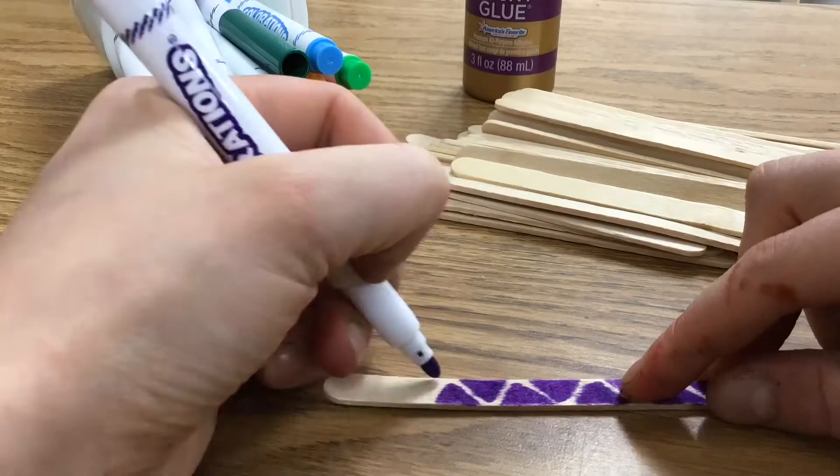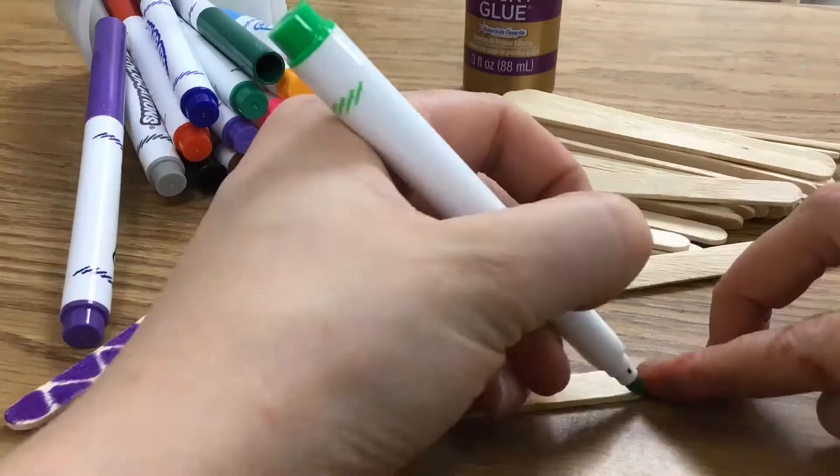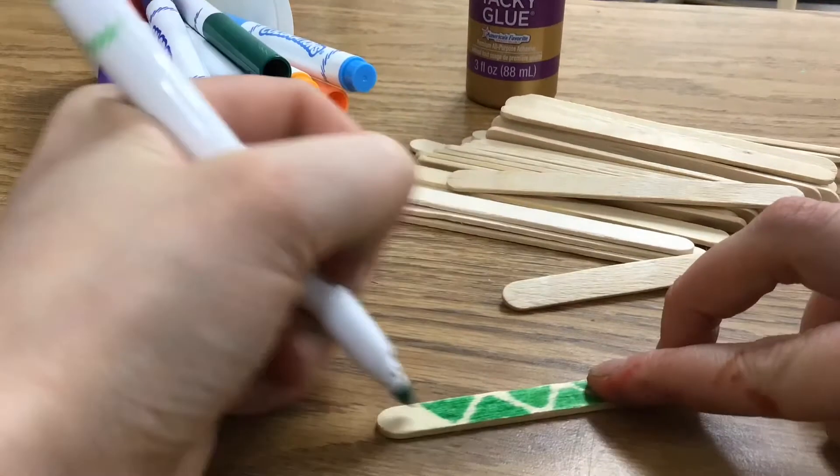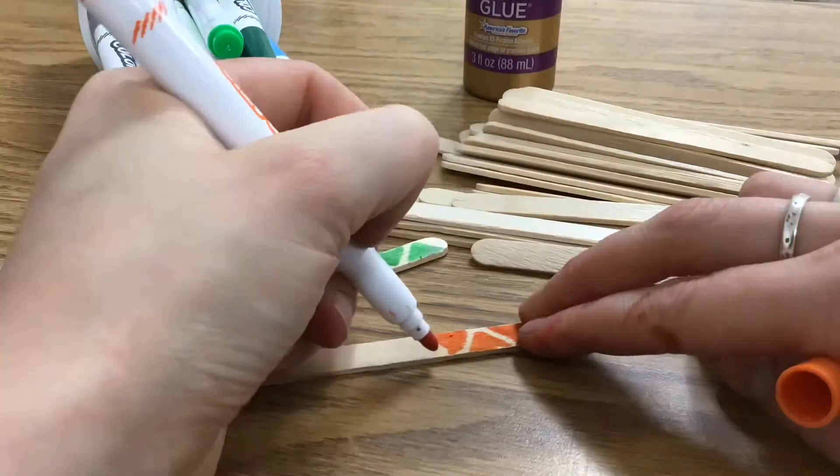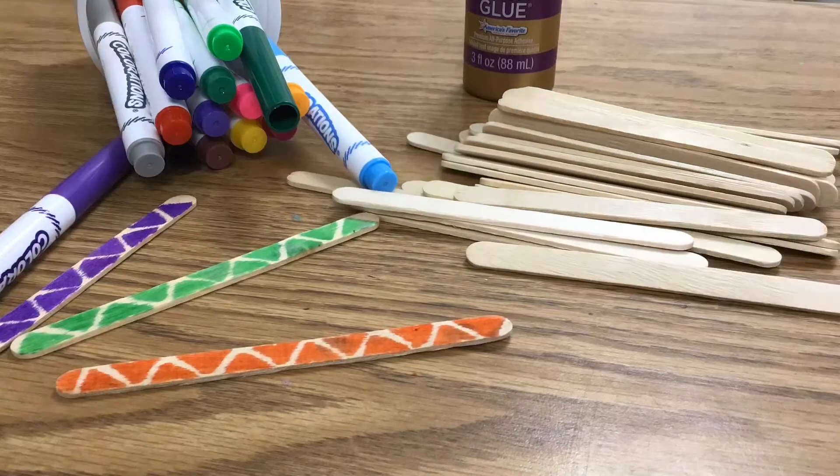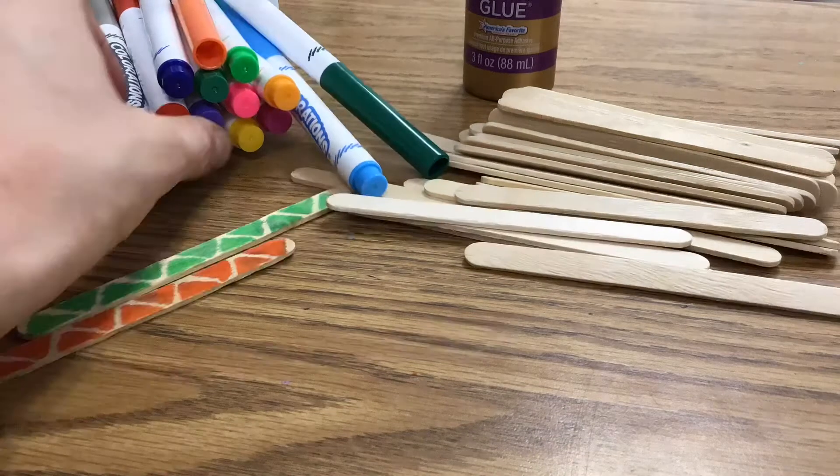In this video I'm making a popsicle stick picture frame. If you have a mixed media kit from the studio, you have popsicle sticks and washable markers in your kit. The first thing you're going to do is color and decorate your popsicle sticks however you'd like.